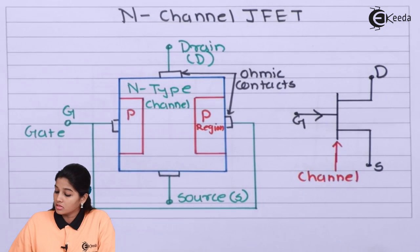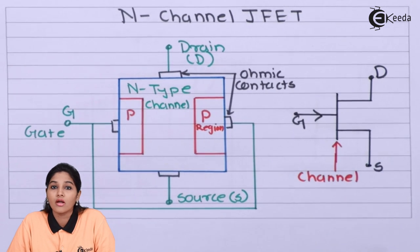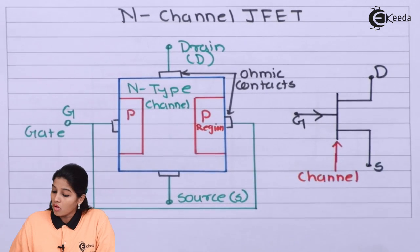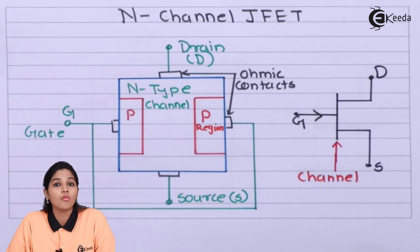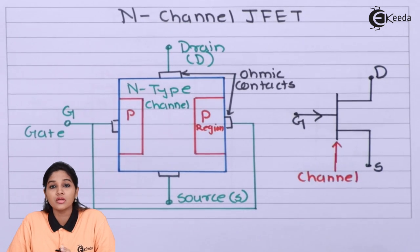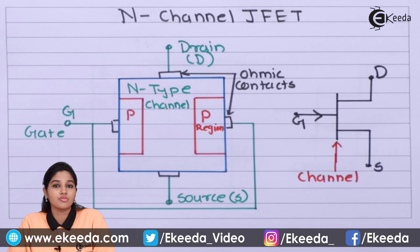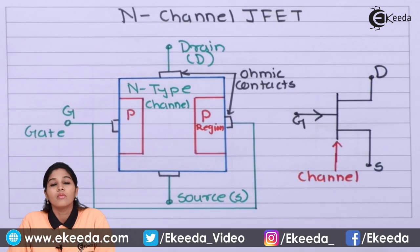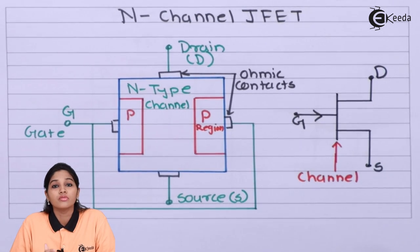Internally, the two P-regions are connected and a single wire is taken out to form the gate terminal. On both sides of the semiconducting bar, two terminals are taken out as ohmic contacts, named as drain terminal and source terminal. The drain terminal is on the upper side and the source terminal is on the lower side. Whenever gate-to-source voltage is applied, drain current flows from drain to source terminal.